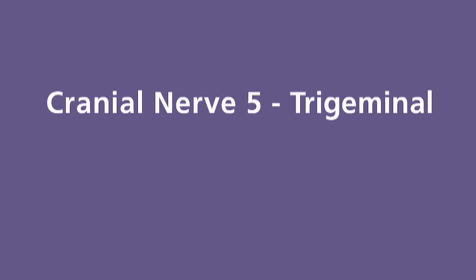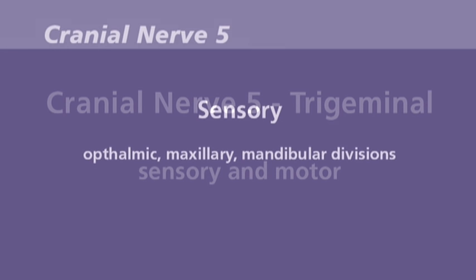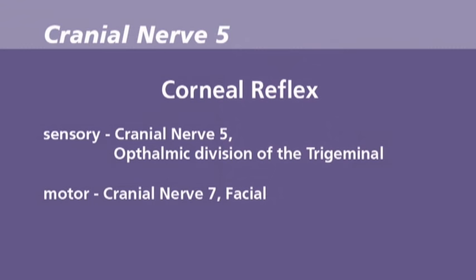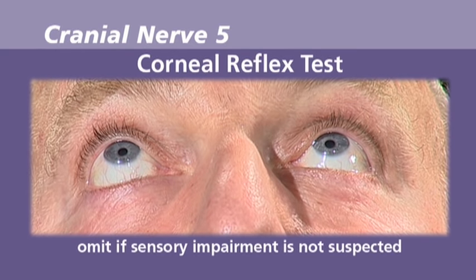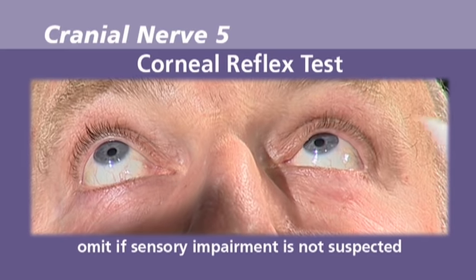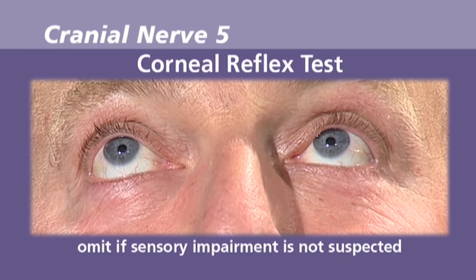The fifth nerve, the trigeminal, has both sensory and motor components. Light touch sensation is tested in the ophthalmic, maxillary and mandibular divisions. I'm now going to test the sensation on your face — please tell me if it feels the same on each side. The corneal reflex involves afferent fibres from the ophthalmic division of the trigeminal nerve and efferent fibres of the facial nerve. If I incorrectly touch the insensitive sclera, no response occurs; when correctly touching the cornea, a bilateral blink response is obtained. This test is uncomfortable and can be omitted if sensory impairment is not suspected.